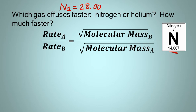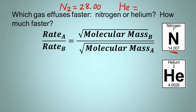Now helium is He. And if we look at the periodic table, it has a mass of about 4.00. And so looking at those two masses, it should be pretty obvious which one is going to effuse faster. It's the helium. But we're going to plug this into the equation.